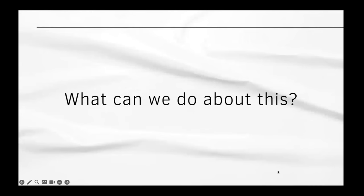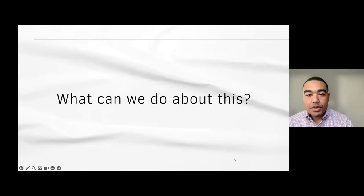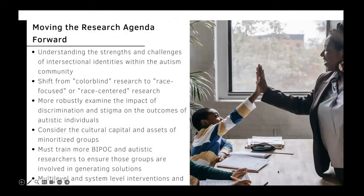This brings us to questions about what we can do, given that intersectionality is having an impact — whether one is a caregiver who is a racial-ethnic minority or whether one is an autistic individual who is sexually or gender diverse. I've been thinking about where we go with this. The very first step is simply acknowledging that autistic people have intersectional identities, and that there are strengths and challenges and disadvantages associated with those intersectional identities that we need to better understand.